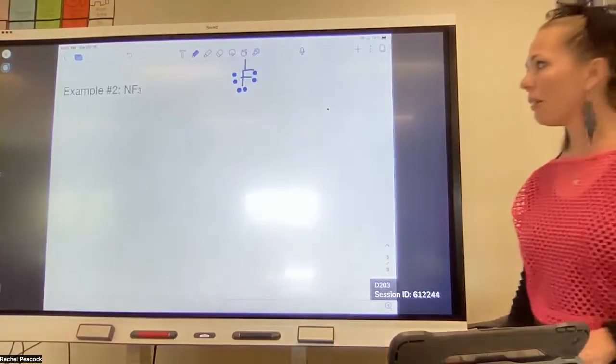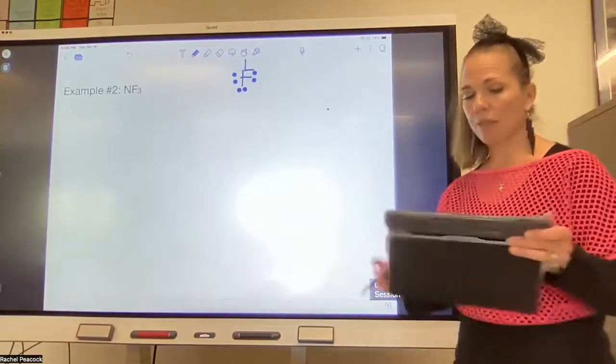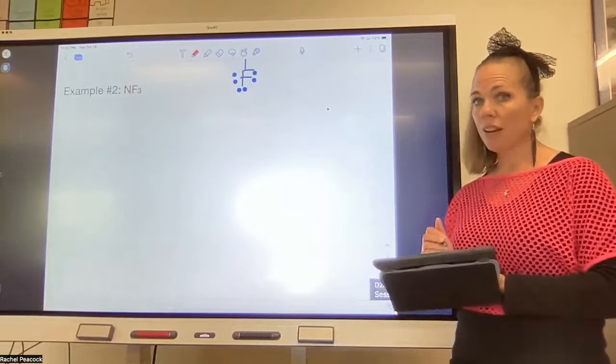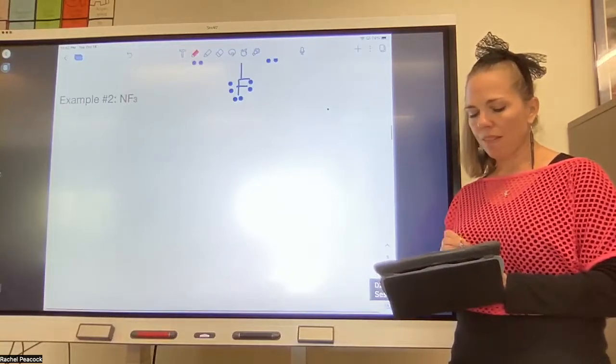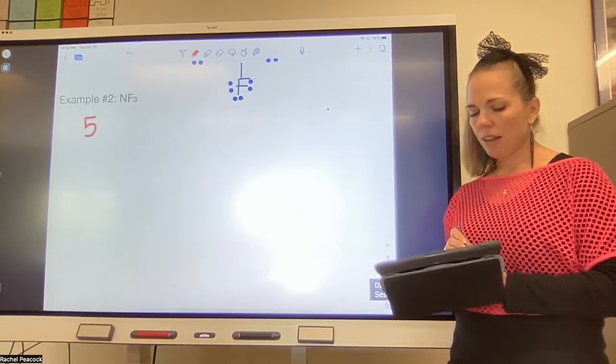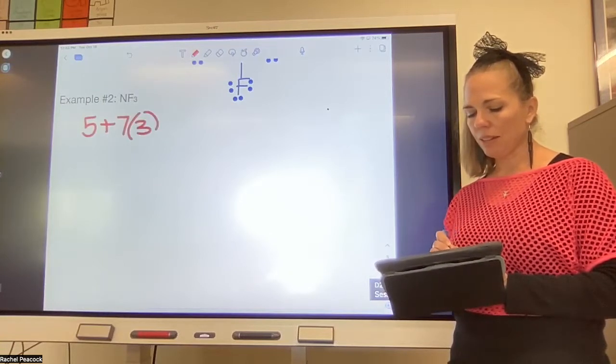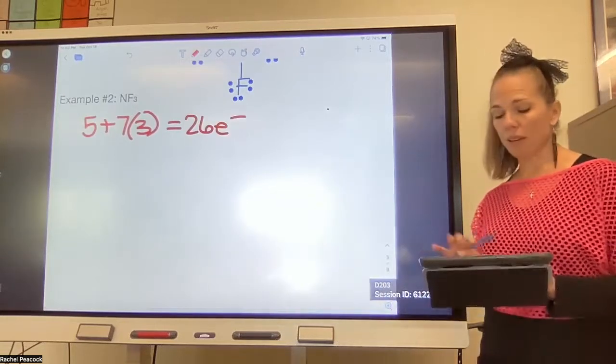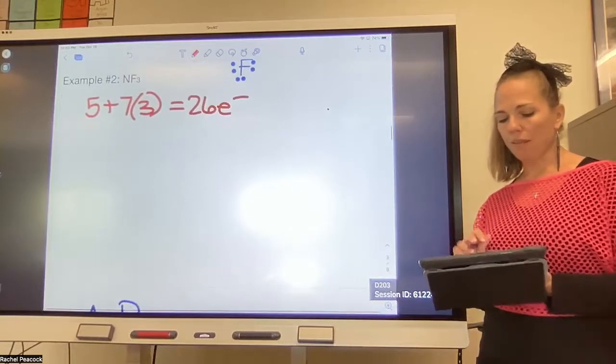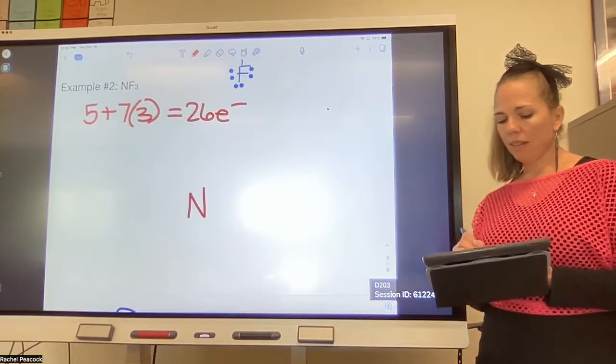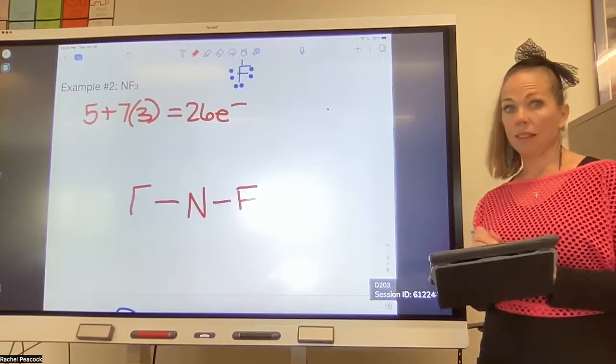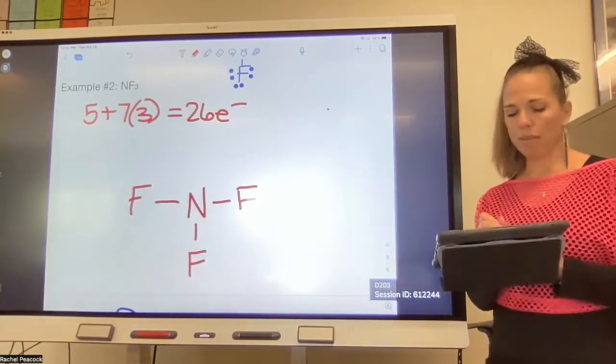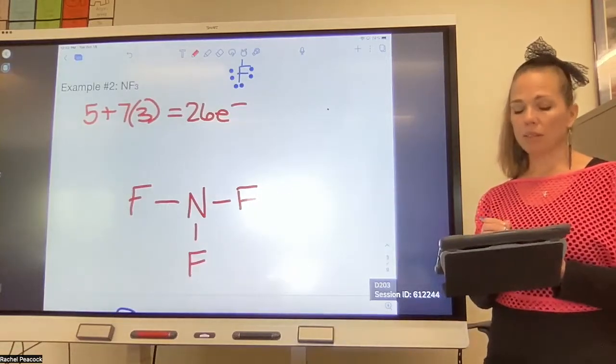Hopefully you had a chance to try NF3. If not, I would recommend you pause this and try it on your own first. But just to look at it: nitrogen has five valence electrons, each fluorine has seven or three fluorines, so that's going to be a total of 26 electrons. I'm going to speed this example up a little because we don't have to go as slowly as we did with CF4. You're going to put N in the middle, fluorine on the right, fluorine on the left, fluorine down at the bottom. I've used two, four, six total. I have 20 more to go.